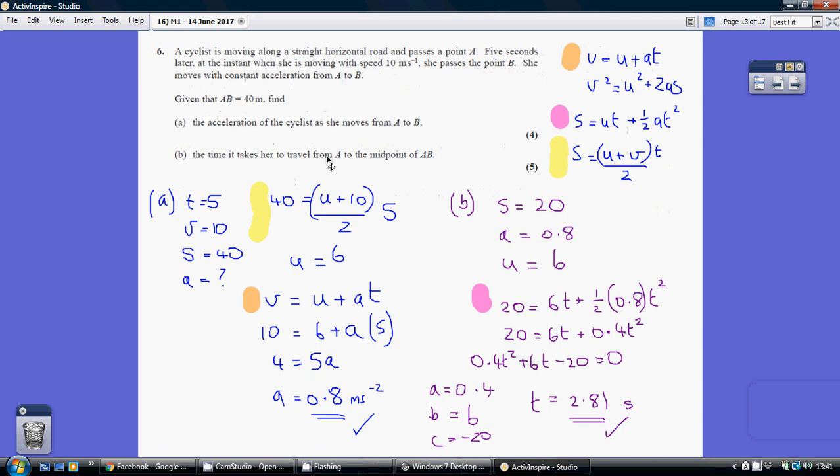So for part A, I know the time taken is 5 seconds. I know my final velocity is 10 meters per second. I know the distance covered is 40 meters, and I need to work out the acceleration.